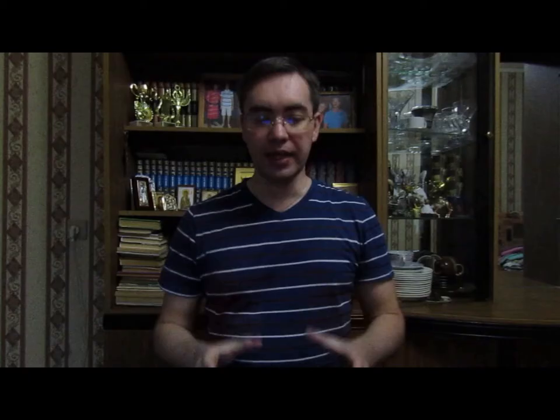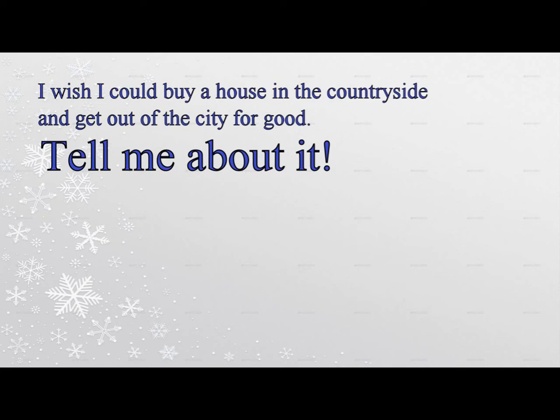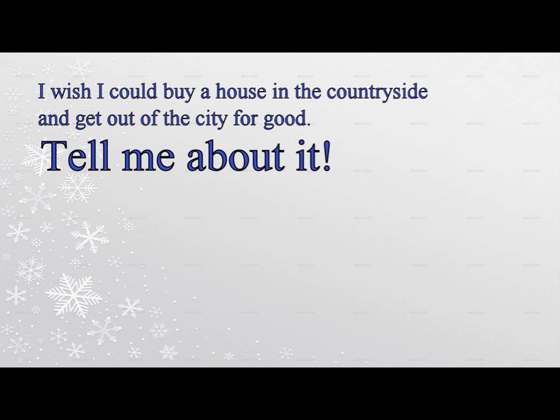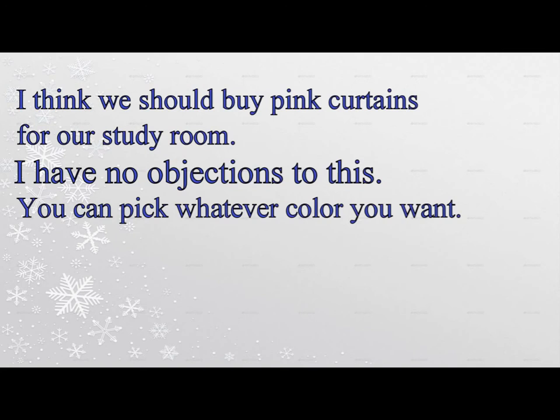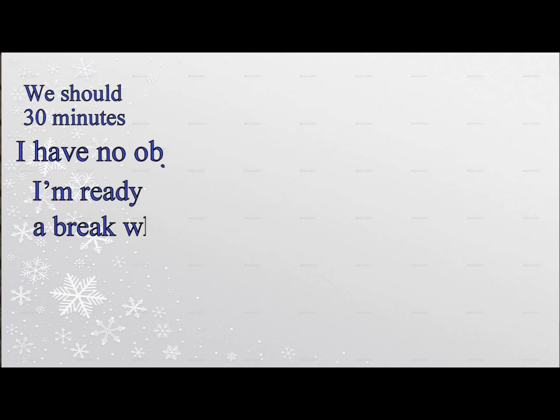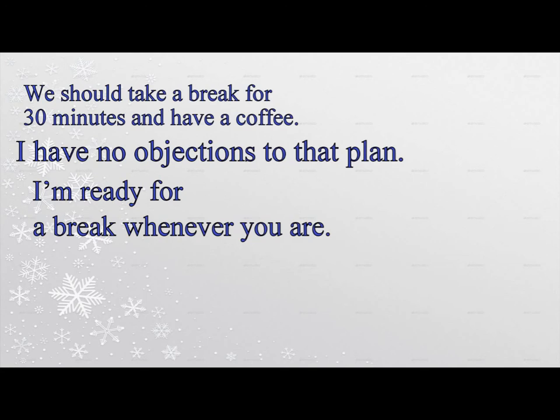'Tell me about it' — this phrase is considered slang and is not typically used in formal English. Examples: 'Taking a taxi to work every day costs so much money.' 'Tell me about it.' 'I wish I could buy a house in the countryside and get out of the city for good.' 'Tell me about it.' 'I have no objections' — this is perhaps one of the weaker phrases of agreement. Usually people say this when they are not really committed to something but see no reason to oppose it either. Examples: 'I think we should buy pink curtains for our study room.' 'I have no objections to this.' 'We should take a break for 30 minutes and have a coffee.' 'I have no objections to that plan. I'm ready for a break whenever you are.'